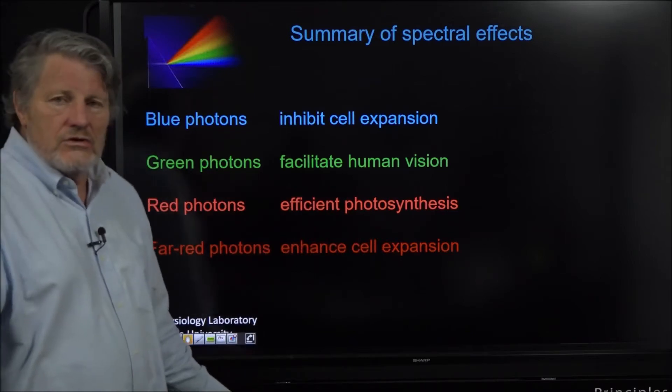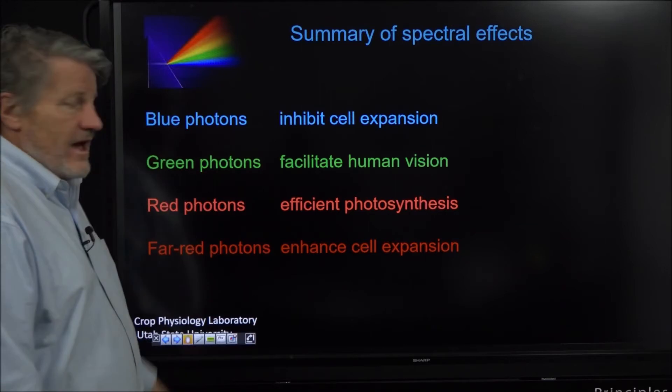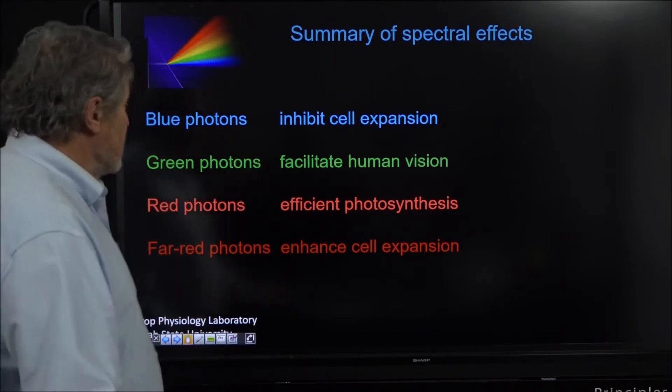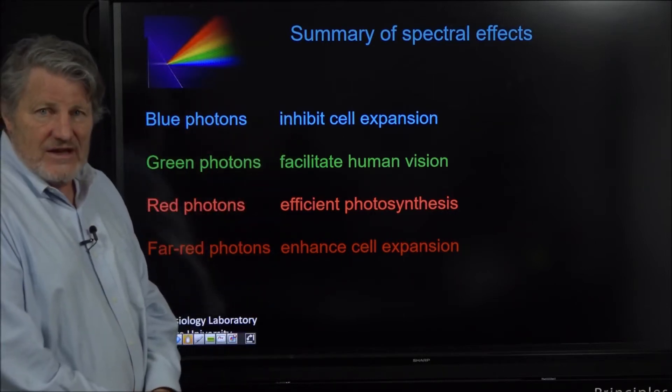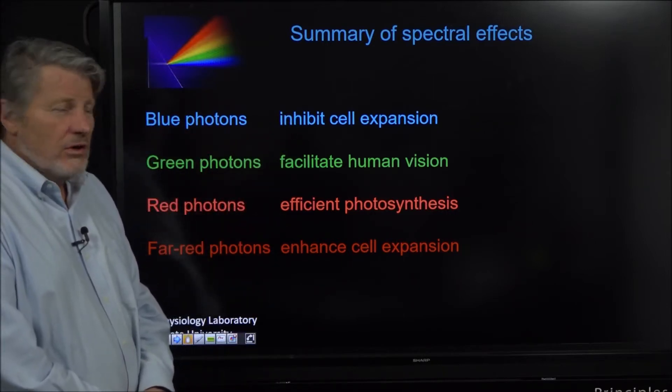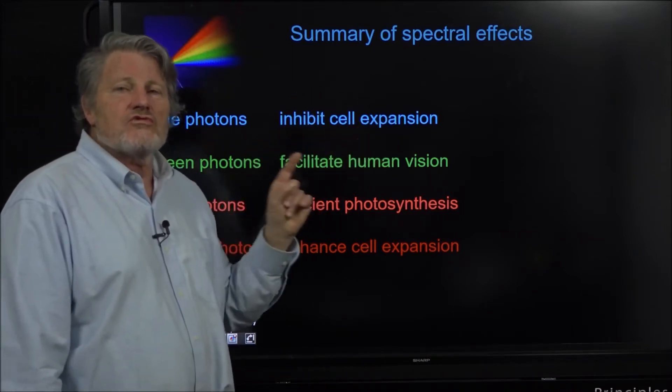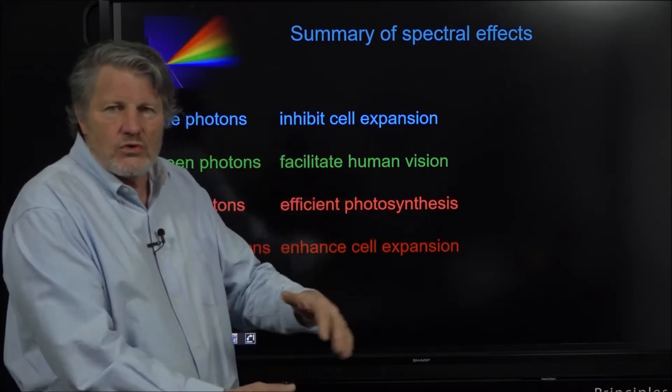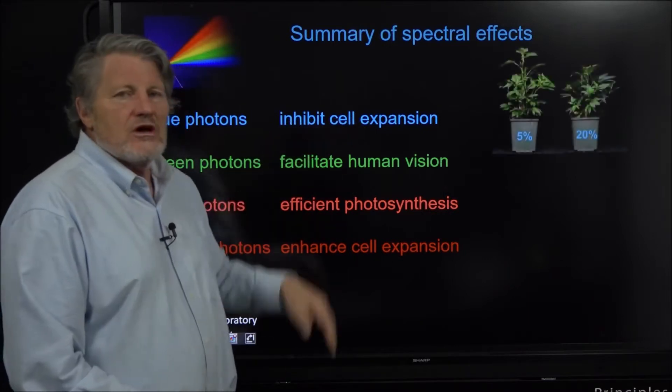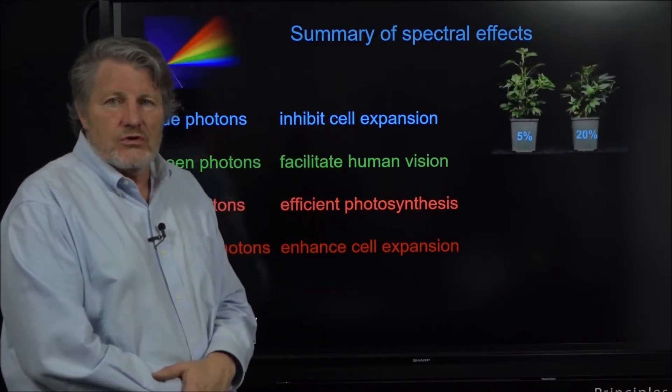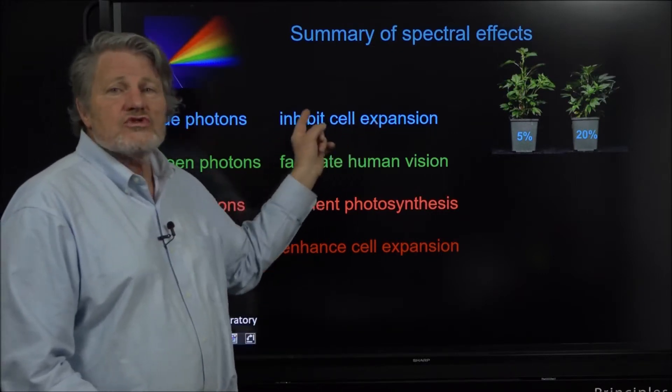This slide summarizes something like 30 years of photobiology for me personally. We have four categories of light. Blue photons inhibit cell expansion. Now that sounds terrible but if it's stem elongation, blue photons are terrific - they keep plants shorter. There's some variability among plants but this inhibition of stem elongation means shorter plants and that's a huge factor. It also means reduced leaf expansion which is bad.